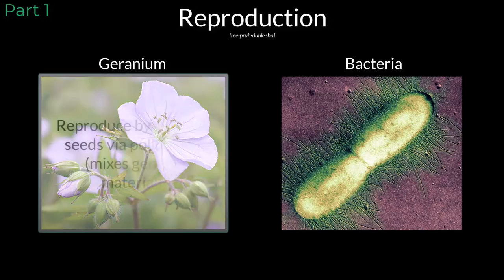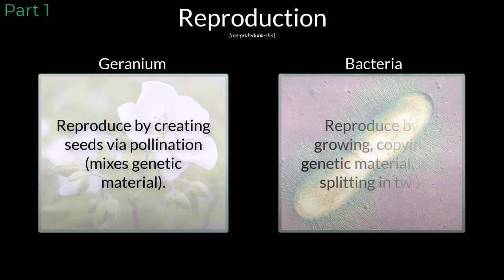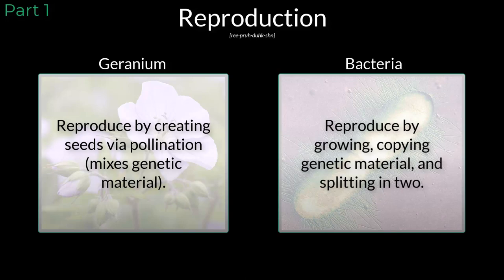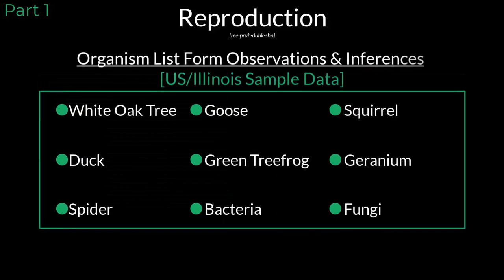Flowering plants reproduce by creating seeds through the process of pollination. Bacteria, on the other hand, reproduce by growing, copying their internal components, and then splitting in two. Take a look at the list of organisms that you created. Think about how each organism is able to reproduce, and if you think two organisms reproduce in a similar way, connect them with a line. Take a few minutes to think and make your connections on your paper.